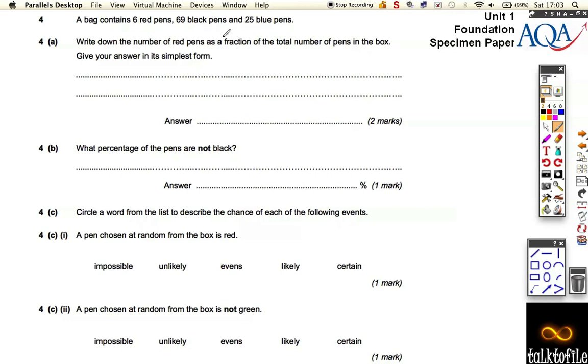So, write down the number of red pens as a fraction of the total number of pens in the box, and we've got to give the answer in simplest form. Well, the total pens—all we've got to do is add up 6, 69, and 25 together.